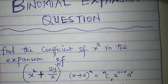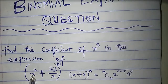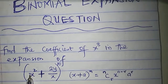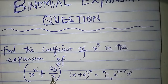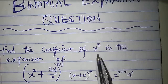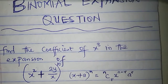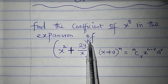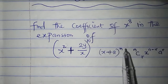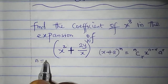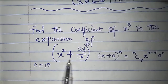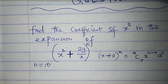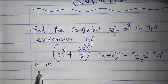So if I compare this, my x is x squared — x squared here is a single term on its own. A is 2y all over x. We need the coefficient of x to the power of 8. We already have n; n is 10. So n is 10.